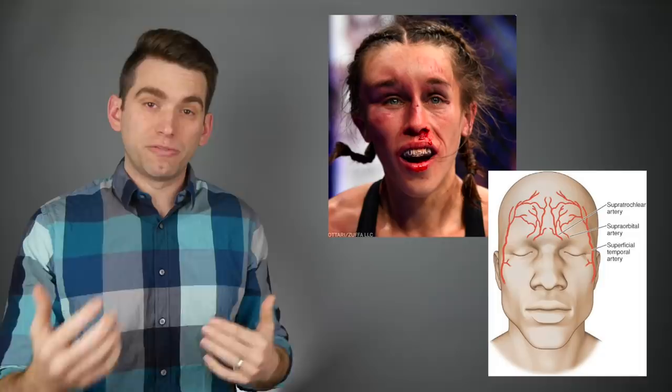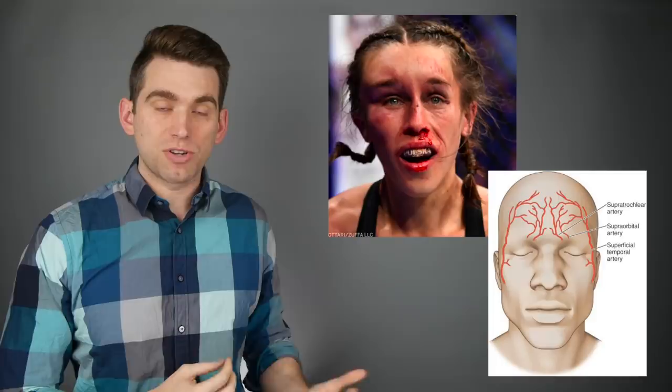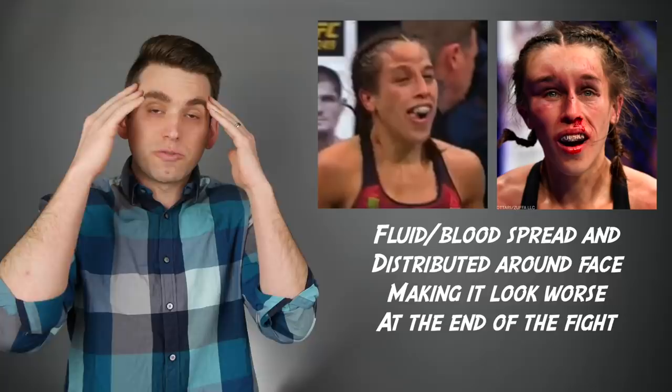That blood and often other kind of fluid accumulate within that space and just eventually get this big goosey looking hematoma. Why it looks so different at the end of the fight is eventually that hematoma starts to spread throughout the forehead and will even drain down around the eyes and around the face.